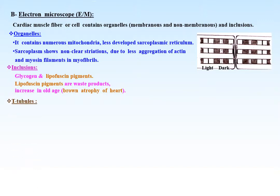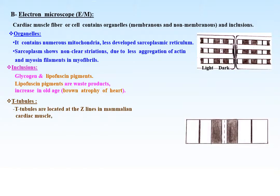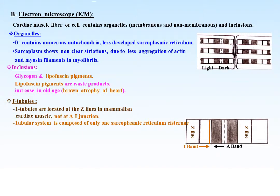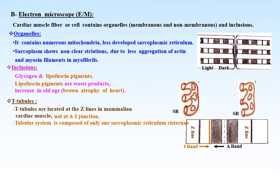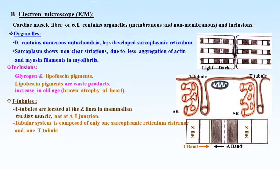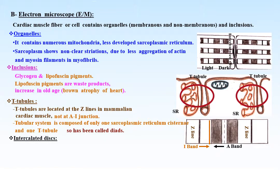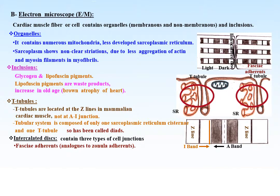T-tubules are located at the Z lines in mammalian cardiac muscle, not at the A-I junction. The tubular system in cardiac muscles is composed of only one sarcoplasmic reticulum cisterni and one T-tubule, so the tubular system is called dyads.